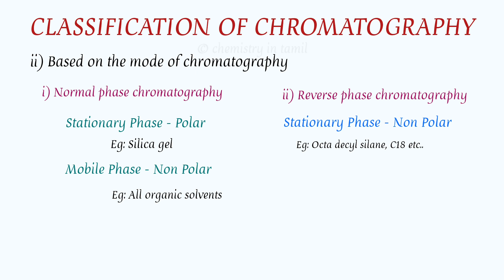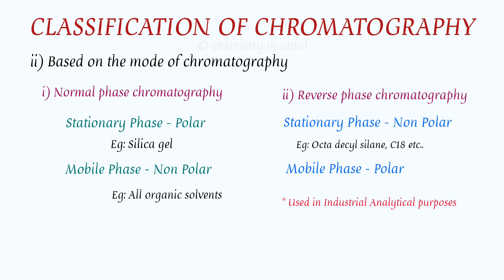In reverse phase chromatography, the stationary phase is non-polar in nature and the mobile phase is polar in nature. Normal phase chromatography is used for general analysis purposes, while reverse phase chromatography is the most widely used method in pharmaceutical analysis.